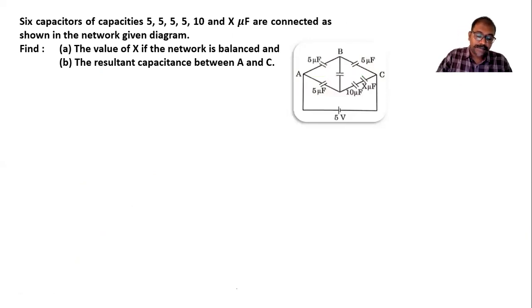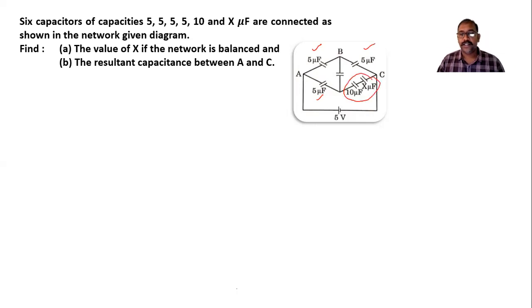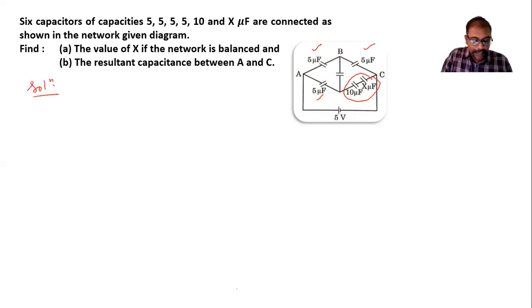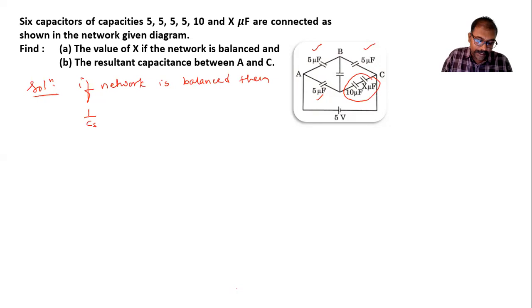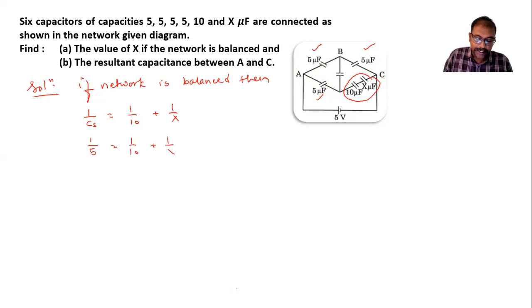Here, the first capacitor is 5, second is 5, third is 5. If the network is balanced, then the effective capacitance of the 10 and x combination must be 5. So for the series combination of 10 microfarad and x microfarad: 1/10 + 1/x must equal 1/5. Writing this: 1/5 = 1/10 + 1/x, so we need to find x.